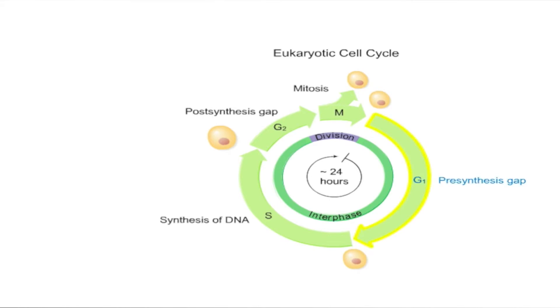During the first phase, G1, the cell grows and prepares for DNA replication, which occurs in the subsequent S phase. Further growth takes place in the G2 phase. G1, S, and G2 collectively are called interphase.